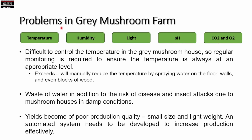We may face several problems in gray mushroom farming, including difficulty controlling temperature in the mushroom house. If not managed, temperature is reduced by spraying water on the floor, walls, and even blocks of wood. This leads to wasting water, and there will be a risk of disease and insect attacks due to damp conditions in the mushroom houses, resulting in poor production quality — specifically, small size and light weight mushrooms at the end.